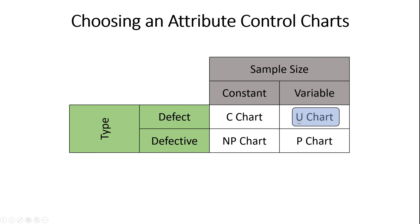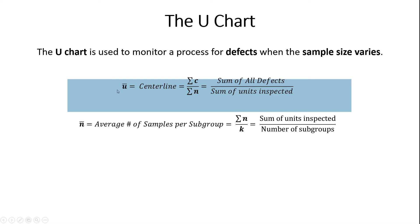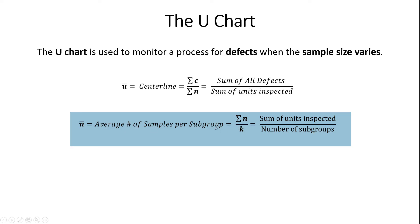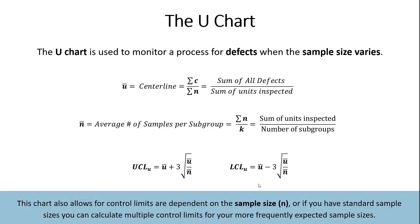Let's keep going with the U chart. The U chart is used when we're trending defects with a variable sample size. There are two parameters to calculate: U bar — the average percent defects per subgroup — and N bar — the average number of samples per subgroup. The upper control limit is U bar plus three times the square root of U bar divided by N bar. For the lower control limit, we subtract that three standard deviations. Similar to the P chart, the U chart is flexible enough to recalculate control limits based on actual sample size instead of average sample size.